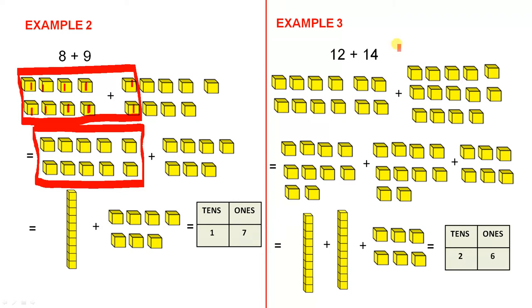Example 3, 12 plus 14, we'll continue on trying to make a 10. 1, 2, 3, 4, 5, 6, 7, 8, 9, 10. Let's put that in a square, there we go.